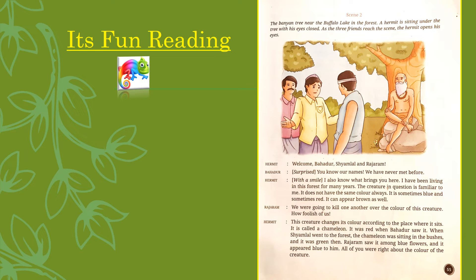Now we move on to the next page. So by the end of Scene 1, all three sat on a village square and talked about the creature and its colour. In Scene 2, they now go to a different location — the bunion tree — to find out who was correct about the colour of the creature. Now let's read Scene 2. The bunion tree near the buffalo lake in the forest. A hermit is sitting under the tree with his eyes closed. As the three friends reach the scene, the hermit opens his eyes.